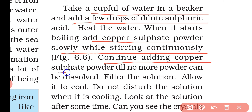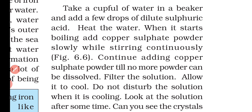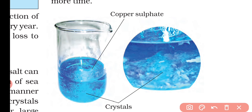Continue adding copper sulfate powder until no more powder can be dissolved — that means we prepare a saturated solution of copper sulfate, in which no more copper sulfate can be added. After that, cover it and allow it to cool. After some time, we will observe crystals of copper sulfate. These are the crystals obtained after the process of crystallization. That's all for today, thank you very much.